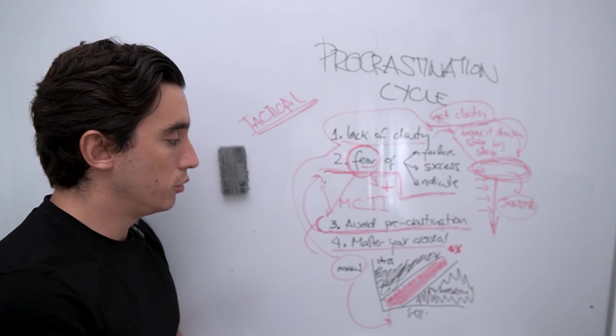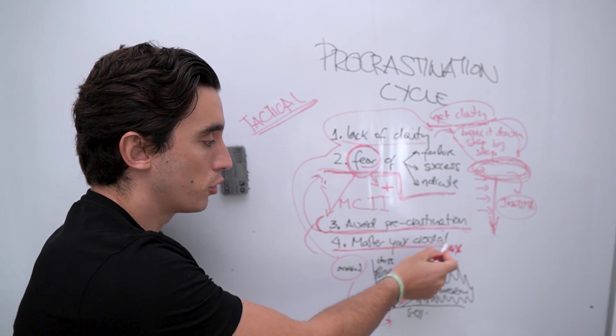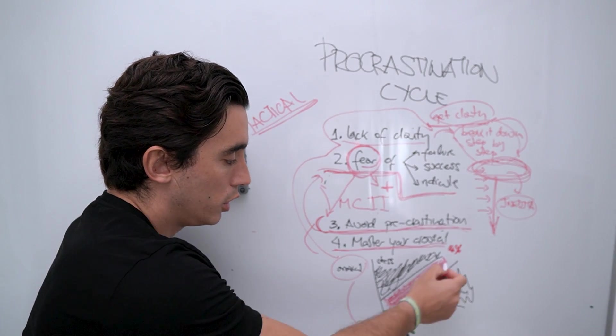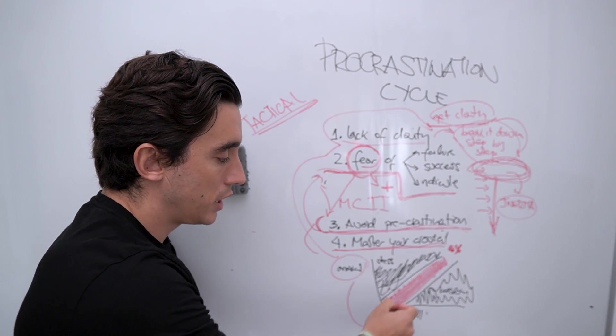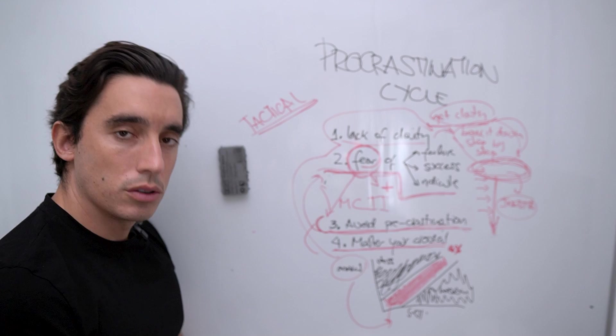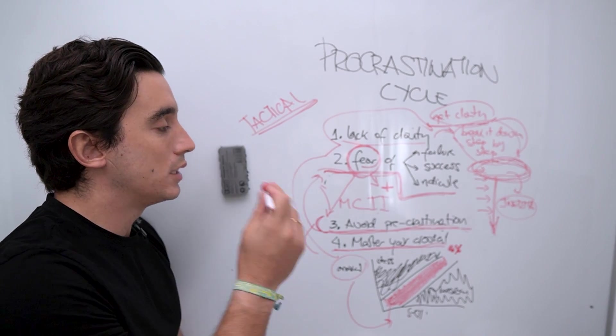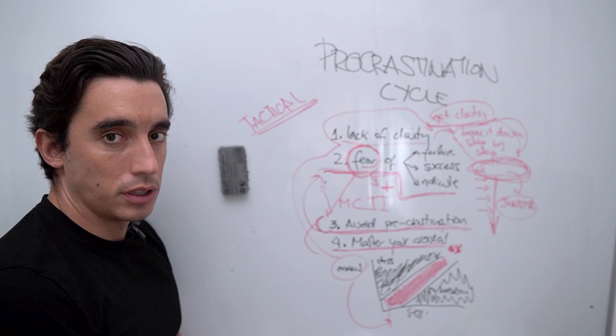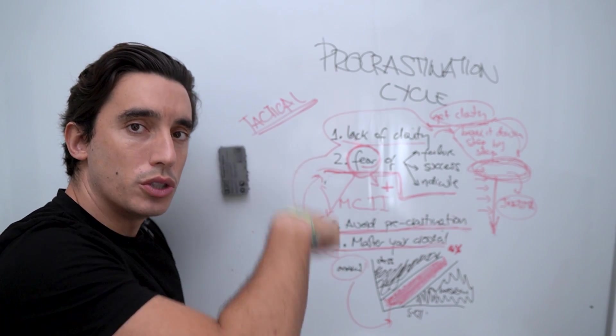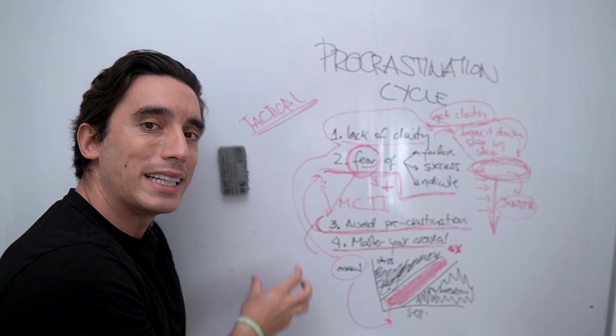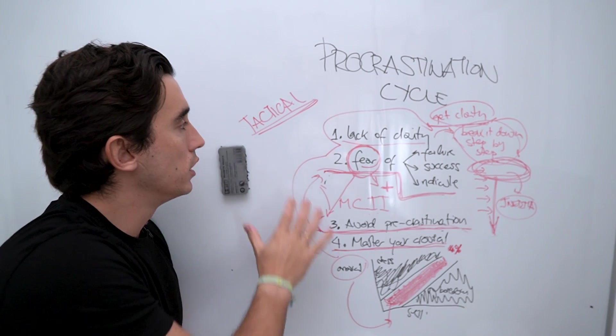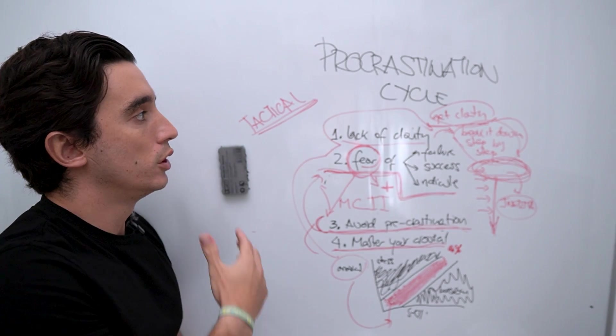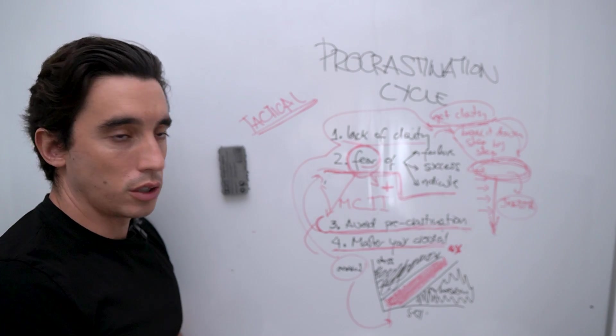You do not try to bite more than you can chew, but at the same time, you do not bore yourself to death by doing things that are just too easy. You learn to stay here in the channel of optimal arousal that, as Mihaly said, is where the magic of flow states actually happen. So that is tactical advice, something you can do today, something that will work right now, something that you don't need to do any long-term strategy in order to not go through the procrastination cycle.